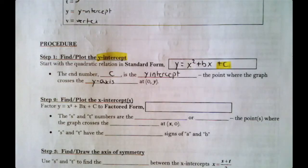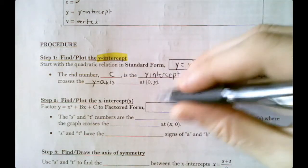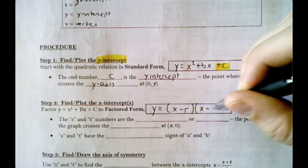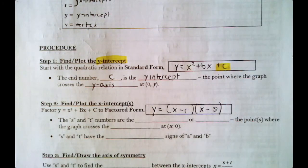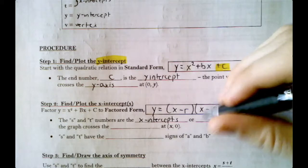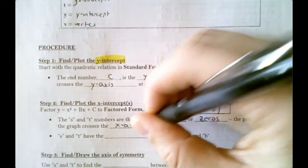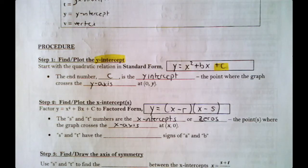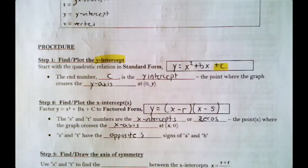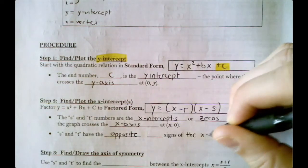Step two is the tricky part: find and plot the x-intercepts. To do that, we take our equation x² + bx + c and factor it into the form (x − r)(x − s). The S and T numbers are the x-intercepts, also called the zeros — the points where the graph crosses the x-axis. The x-intercepts have the opposite signs of the numbers in the factored form.